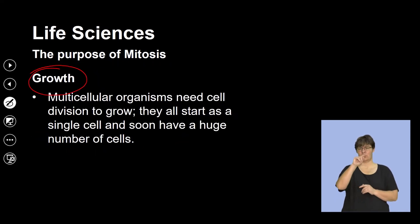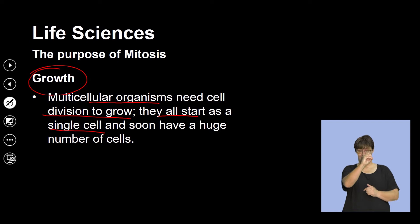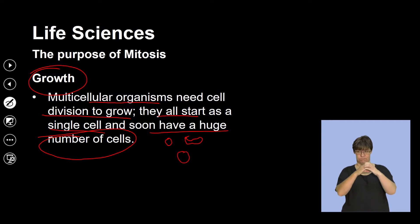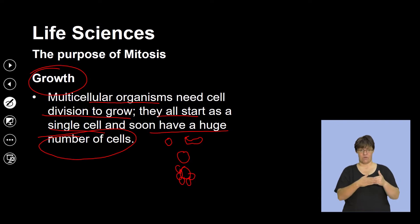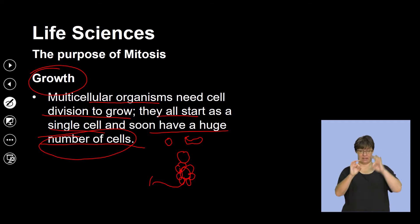In multicellular organisms, cell division is needed to grow, as they all start from a single cell. Soon after fertilization they divide to form a large number of cells. An egg and a sperm fertilize to form a zygote, and that zygote undergoes cell division to become a blastocyst, eventually growing into a huge number of cells and becoming multicellular.